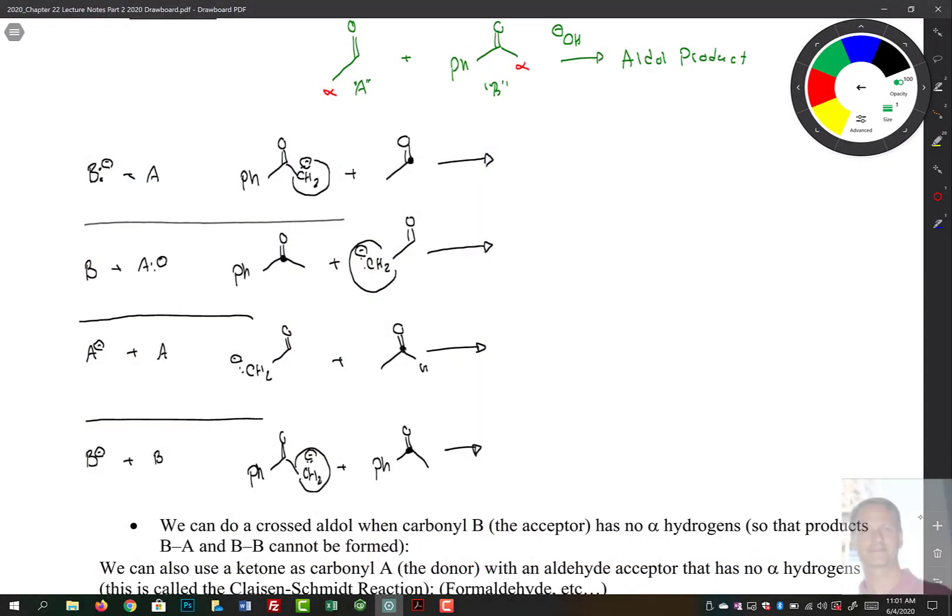So here we have acetaldehyde, which we're just going to call compound A, plus acetophenone, which is our compound B. And we can add these together in all possible combinations. So we could have the enolate be B minus. B minus would have a minus charge right here, because that's compound B, and that's our alpha position.